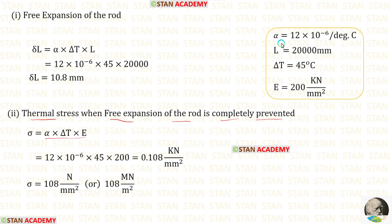Let us apply the values of alpha, delta T and E. After that, we are getting these. We can convert that into either Newton per millimeter square or meganewton per meter square.